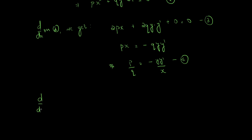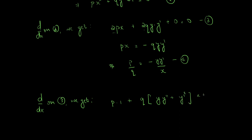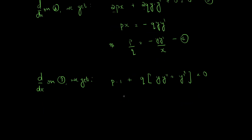Now differentiating equation 3 (which is px + qy·y' = 0) with respect to x, we get p·(1) + q·(y·y'' + y'²) = 0. This can be written as p = -q(y·y'' + y'²).